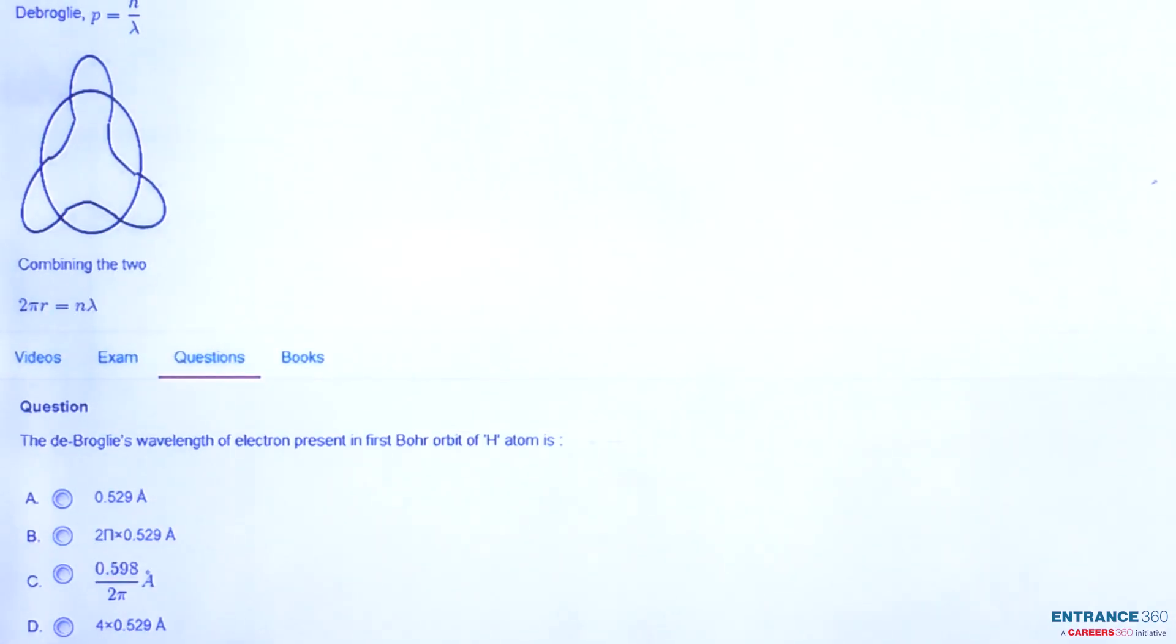So the question says the de Broglie wavelength of electron present in the first Bohr orbit of H atom. So we have to calculate the de Broglie wavelength of electron which is present in first Bohr orbit of hydrogen atom.